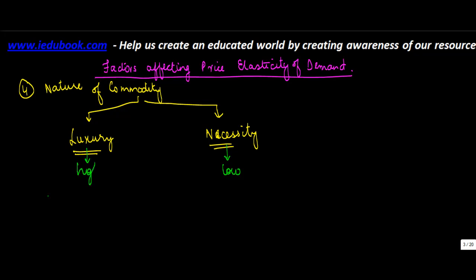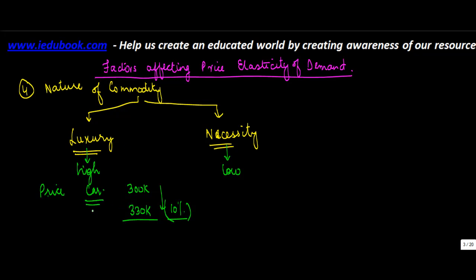For example, if the price of a car that a consumer wanted to buy increases from 300,000 to 330,000, which is an increase of ten percent, this increase may actually deter a consumer from buying a car. Any increase in price is likely to affect the elasticity of demand — if it is increased by ten percent, the consumer will defer his purchases.